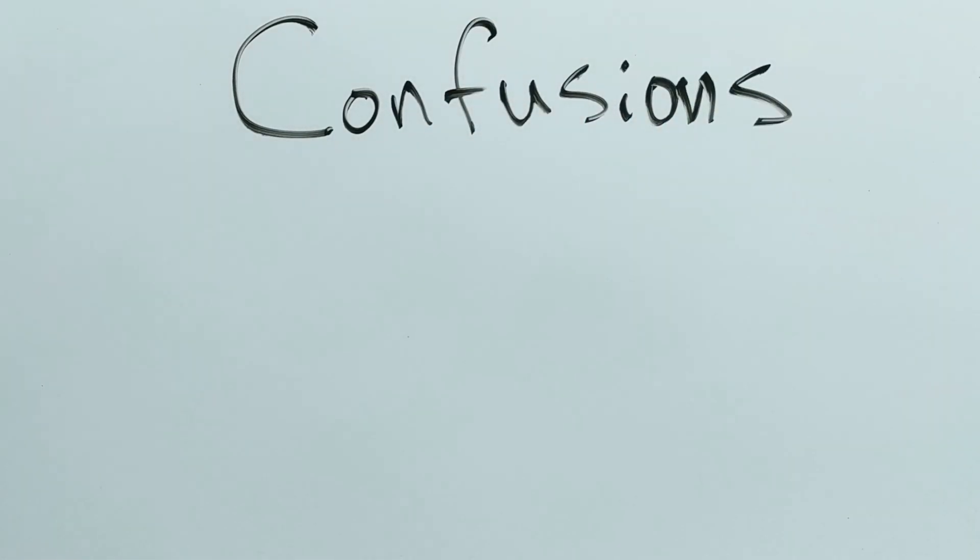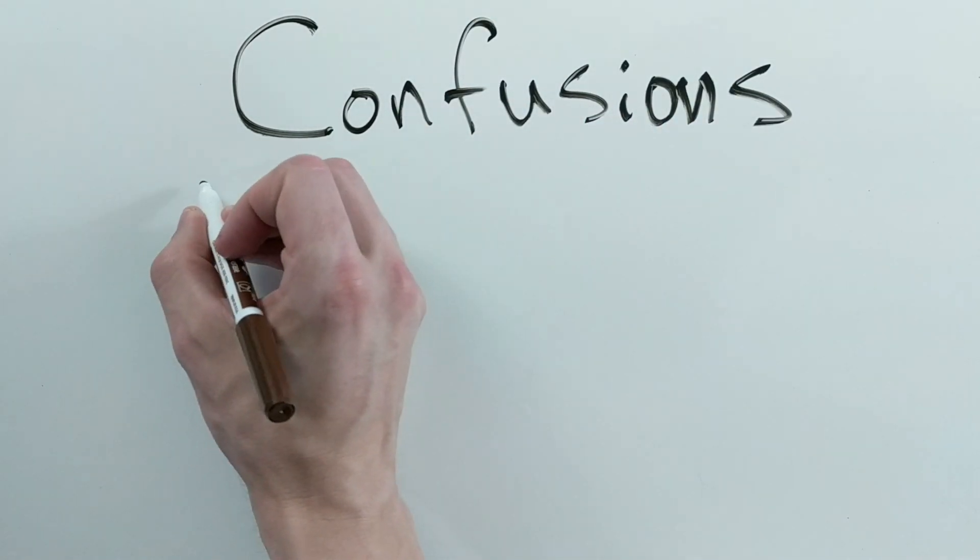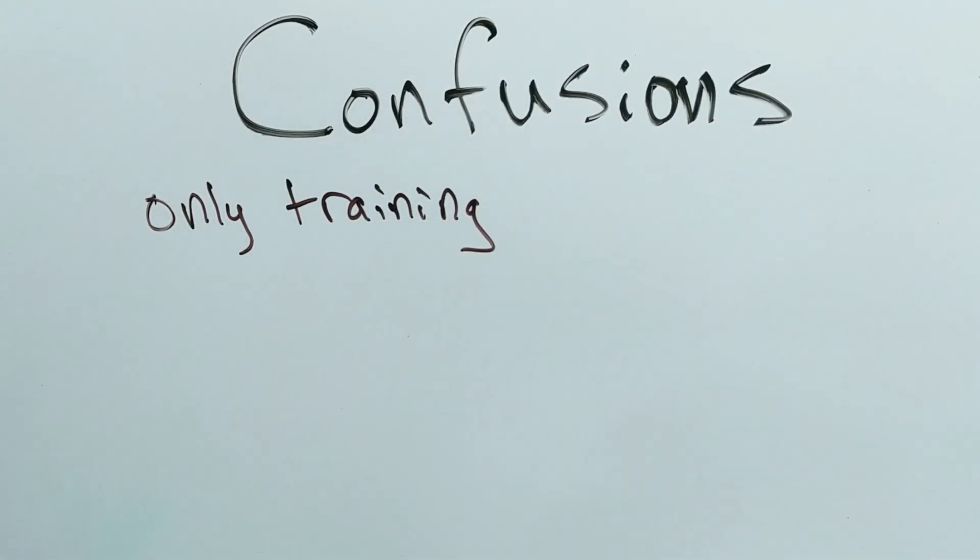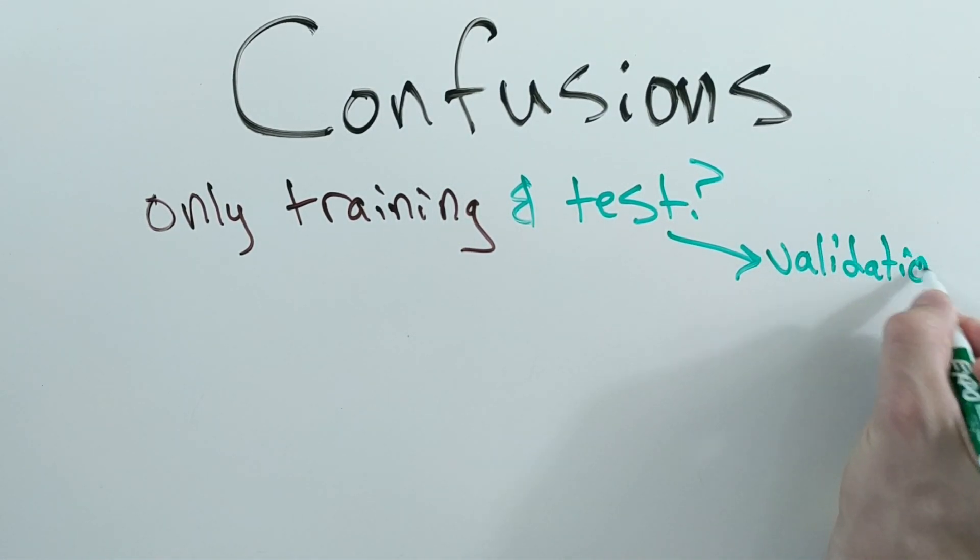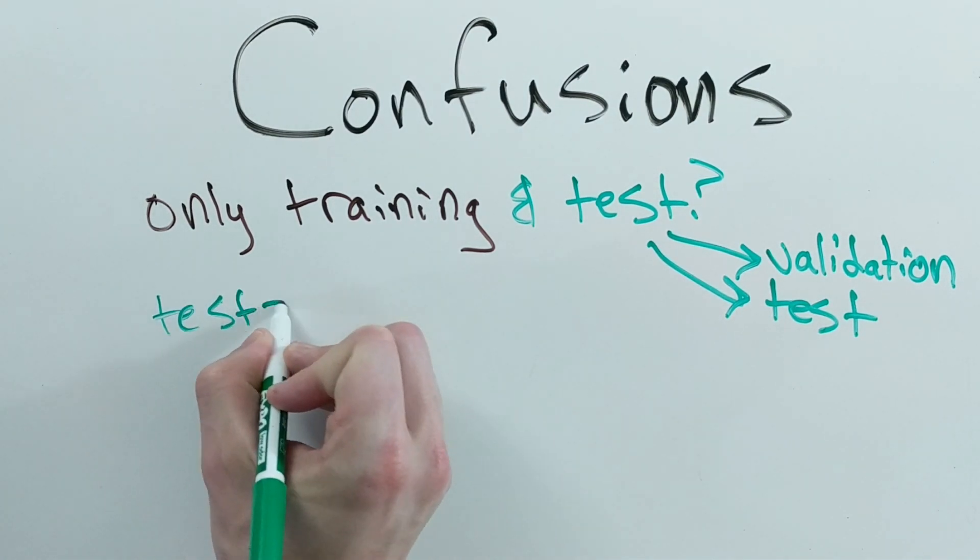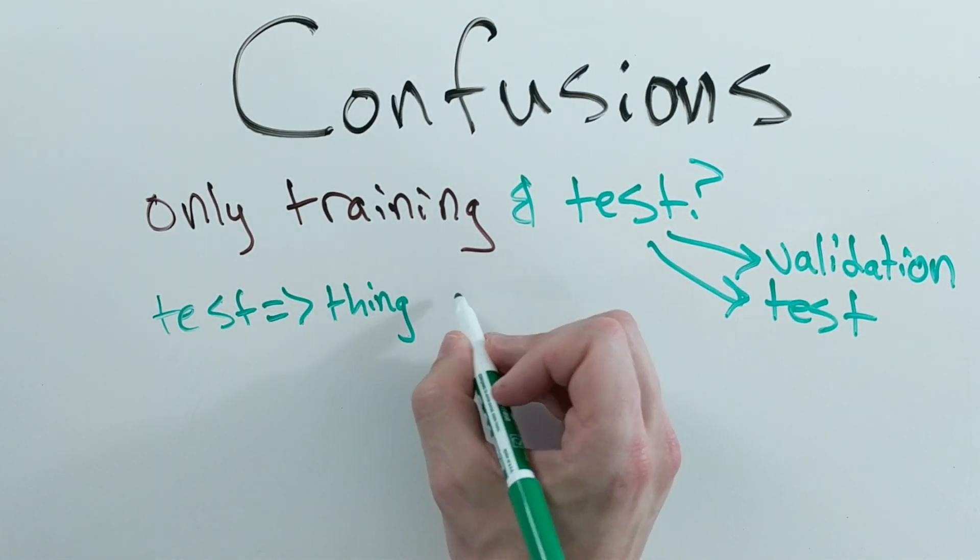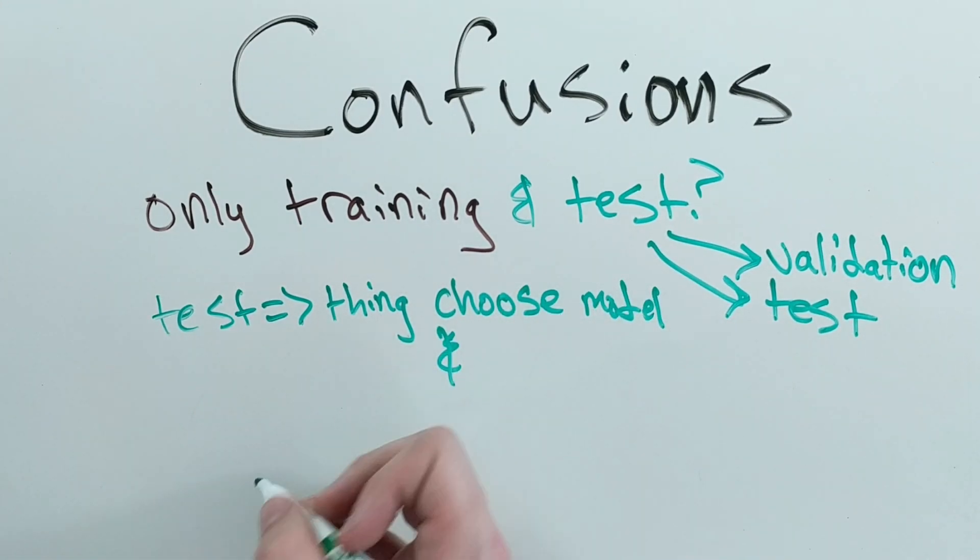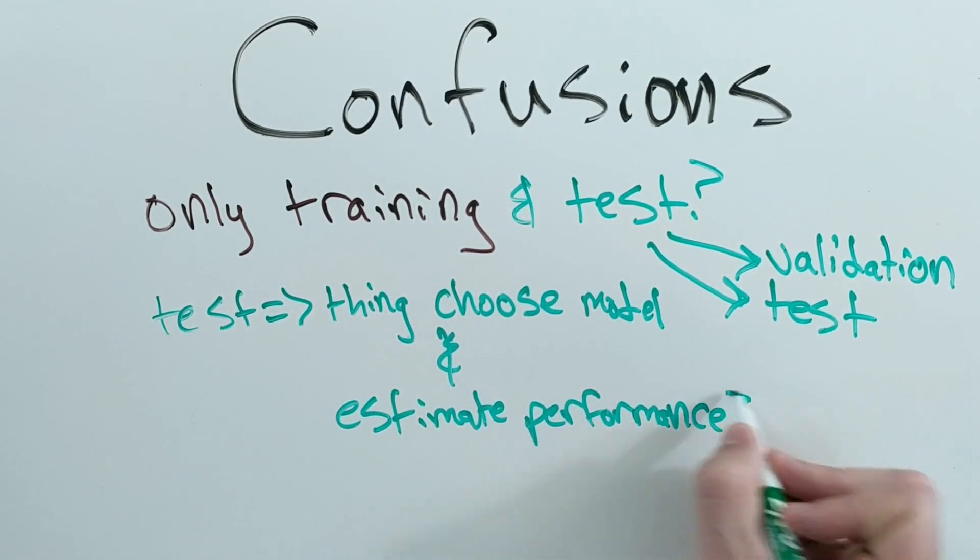What's confusing is that in the real world, a lot of tutorials and instructions only refer to the training set and a test set, where the test set acts as both the validation and the testing sets as I defined earlier. That is, a lot of tutorials refer to the test set as both the thing you use to choose the best model and the thing you use to estimate performance on real-world data.